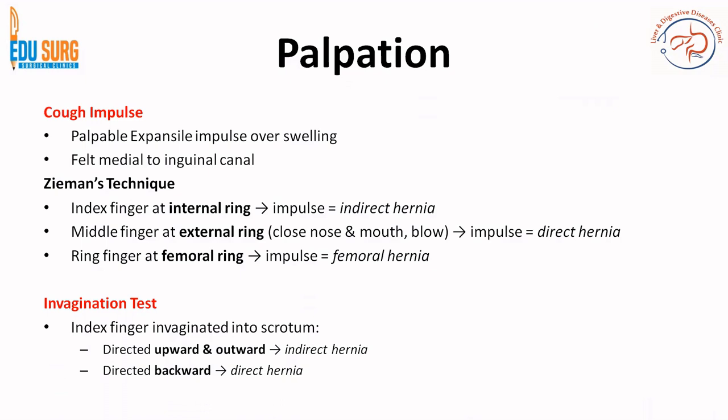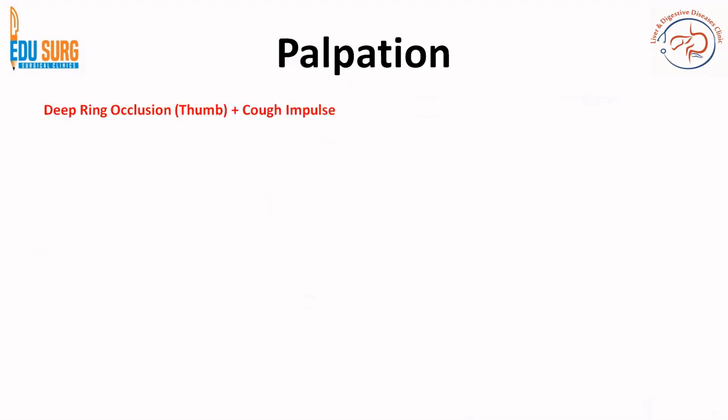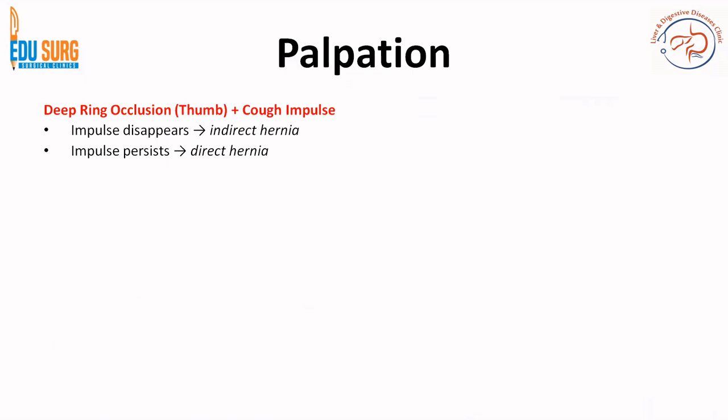The invagination test — some units don't recommend doing it, but it is not that difficult in reducible hernias. The index finger is invaginated into the scrotum and you try to enter the inguinal canal through the superficial ring. If the impulse is directed upward and backward, it is an indirect hernia; if directed only backward, it is a direct hernia. The deep ring occlusion test: occlude the deep ring with the thumb after reducing the hernia and observe whether the cough impulse is no longer visible — if so, it is an indirect hernia. If the impulse persists and is medial to your thumb occlusion, that is a direct hernia. The indirect hernia comes through the deep inguinal ring, so thumb occlusion prevents it from coming out.